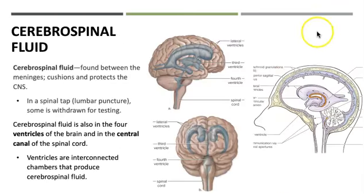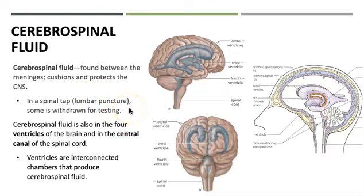Within the brain and around the spinal cord, we have cerebrospinal fluid found in a layer known as the subarachnoid space, just below the arachnoid mater layer. It also travels around the brain and in certain ventricles, helping to cushion and protect our brain and spinal cord. Sometimes we need to perform a spinal tap, going just below lumbar vertebra L2 — typically around L4 — to make sure we have no contact with the spinal cord.